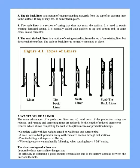Advantages of a liner. The main advantages of a production liner are: total costs of the production string are reduced, and running and cementing times are reduced. The length of reduced diameter is reduced, which allows completing the well with optimum sizes of production tubings. Complete wells with less weight landed on wellheads and surface pipe. A scab liner tie-back provides a heavy wall cemented section through salt sections. Permits drilling with a tapered drill string where rig capacity cannot handle a full string, such as when running heavy 9 and 5/8 inch casing. The disadvantages of a liner are: a possible leak across a liner hanger, and difficulty in obtaining good primary cementation due to the narrow annulus between the liner and the hole.